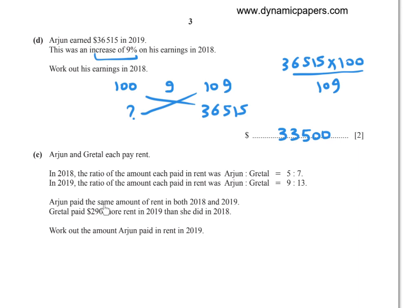Since Arjun paid the same amount in both years, the number of parts for Arjun in 2018 is 5 and in 2019 is 9. Multiply the first ratio by 9 and the second ratio by 5 to make Arjun's parts equal. Now the ratio Arjun to Grittle is 45:63 in 2018, and 45:65 in 2019. Arjun's parts are now equal.